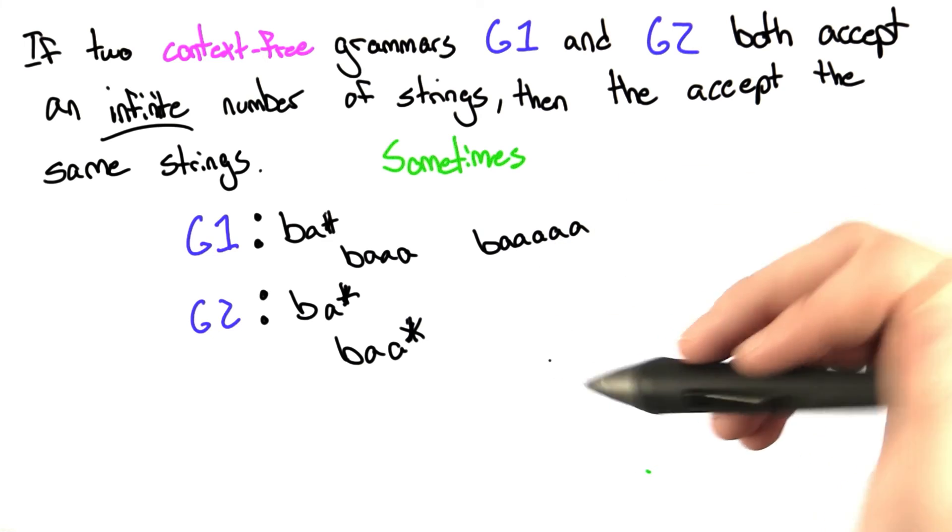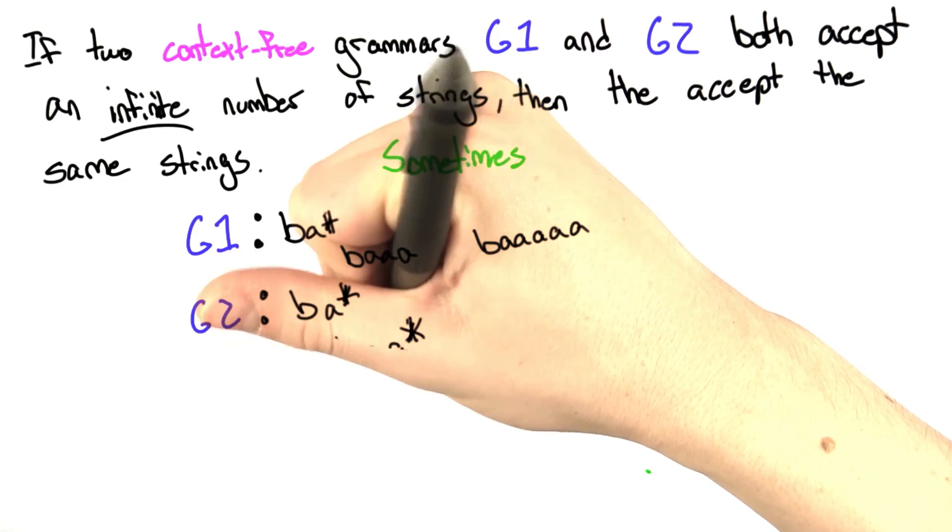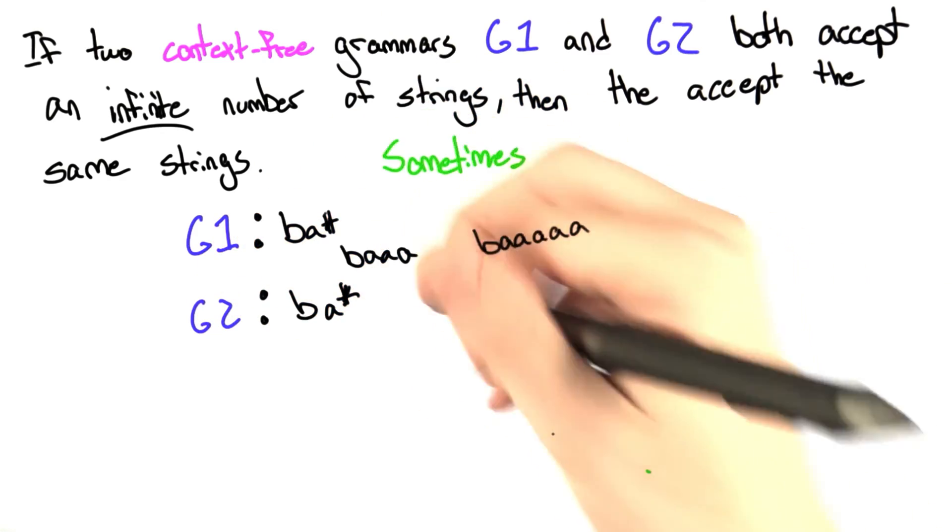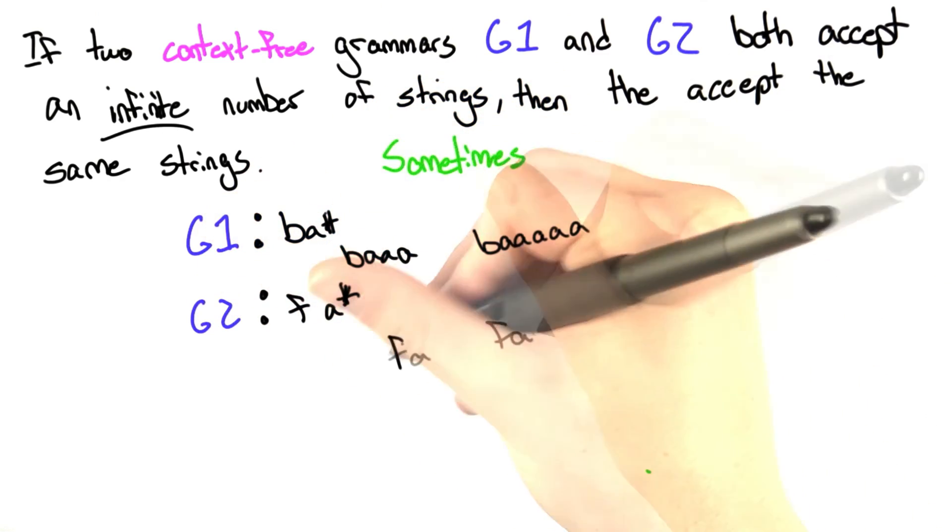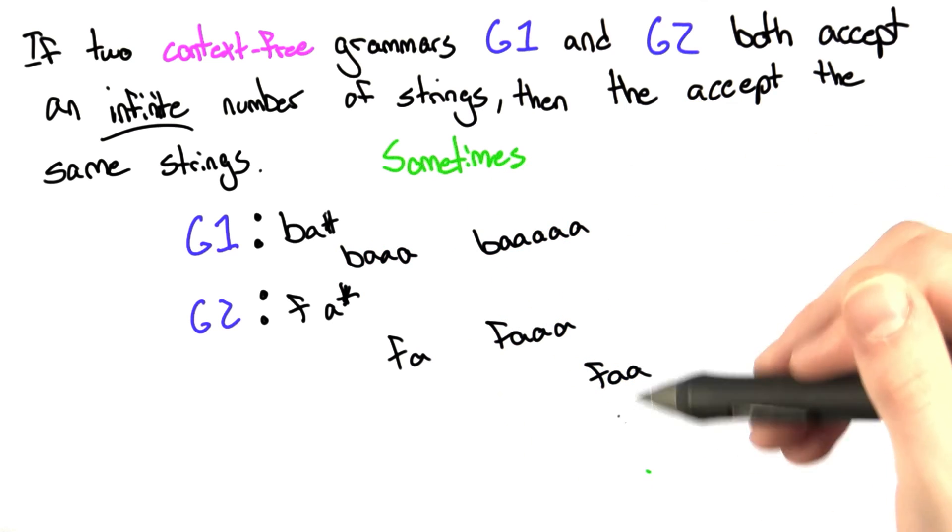So let's come up with a situation where this isn't true. So instead of bah, it's fa. So we got fa, fa, and fa. A lot of A's. These are both infinite grammars.